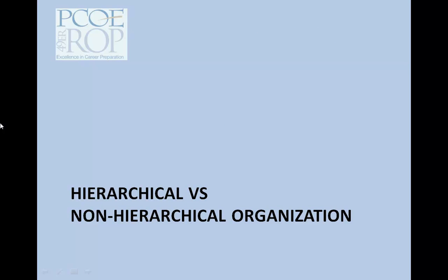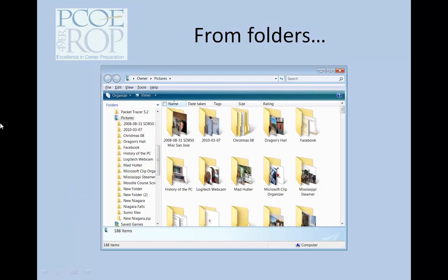Tagging creates a totally different kind of organization of information called non-hierarchical. We're more accustomed to hierarchical organization such as that used by the folder structure. When using a hierarchical system such as folders, each item is only categorized once and is categorized according to the levels above it. For example, a picture may be found in the pictures folder, then in the 2010 folder, and then in the summer vacation folder.